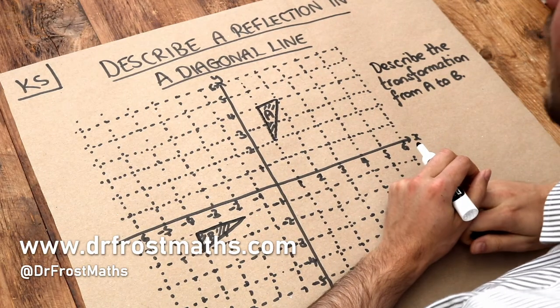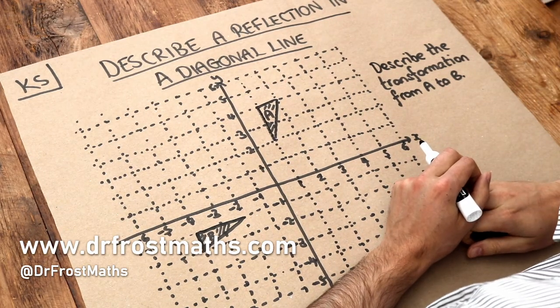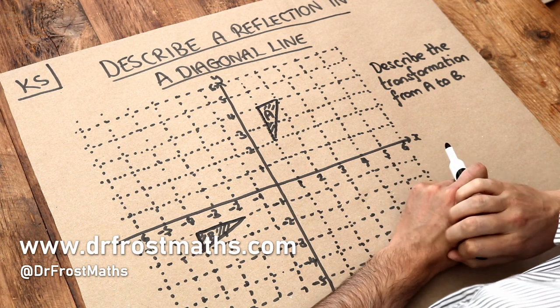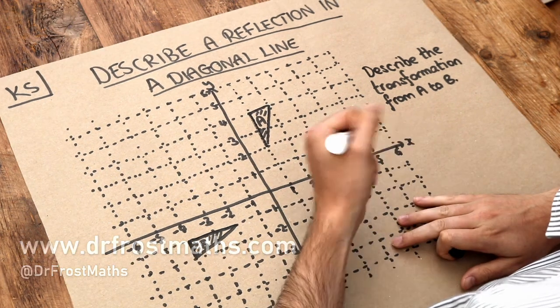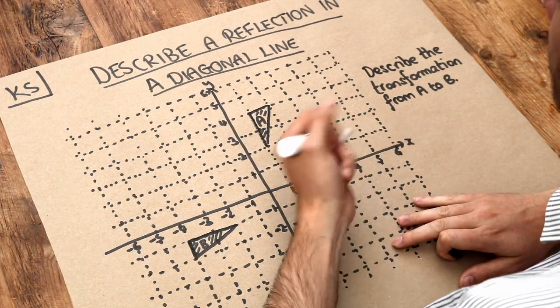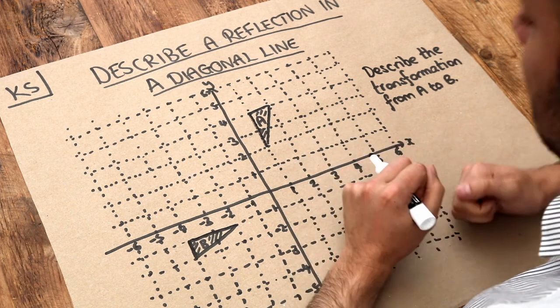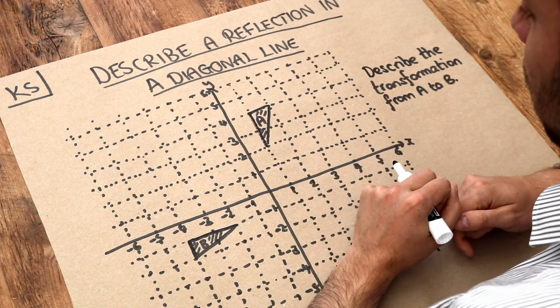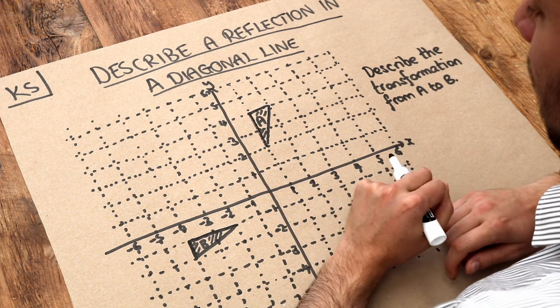Hello and welcome to this Dr. Ross Math's key skill video on describing a reflection in a diagonal line. In the previous video on describing a reflection in a horizontal or vertical line, we first identified where the line of reflection was and then gave the equation of it.